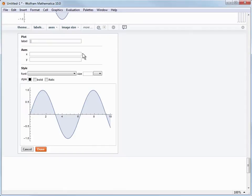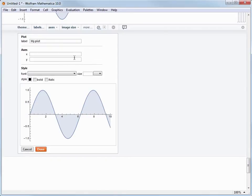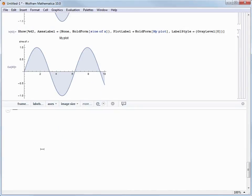And we have control over things like the typeface and font size when doing this. Now, I'm going to type in My Plot for the general label, and you can see a preview of what that will look like when the option is applied. Let's also put in a label of sine of X for the Y axis and click Done. And as before, we see the appropriate options and option values pasted in.